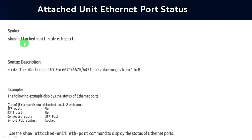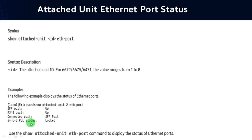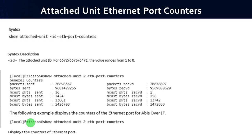If you want to get the attached unit Ethernet port status, follow the syntax: show attached-unit <id> eth-port. This provides the Ethernet port status. To get the Ethernet port counters, use: show attached-unit <id> eth-port-counters.